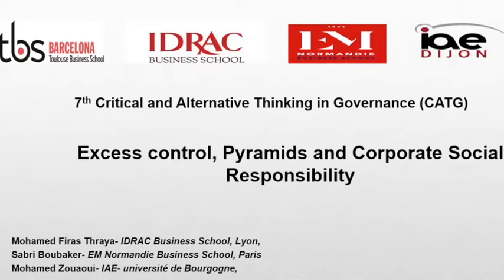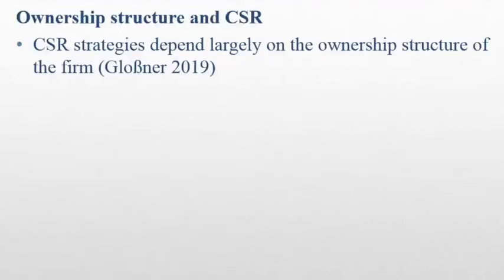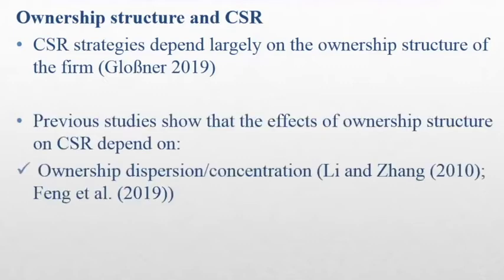Let's start with the motivation of this paper. The motivation comes basically from the literature review. For example, Glovner in 2019 finds that CSR strategies depend largely on the ownership structure of the firm. The question is how? Other studies show that concentration of ownership has negative effects on CSR performance, on CSR communication, CSR activities and so on.